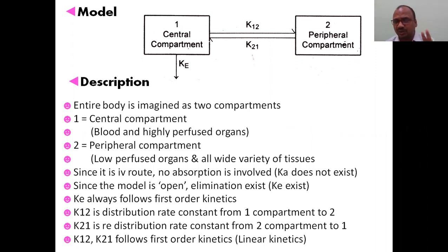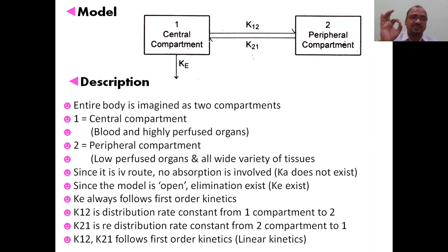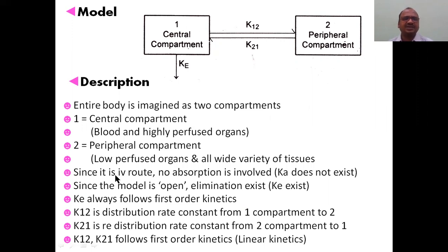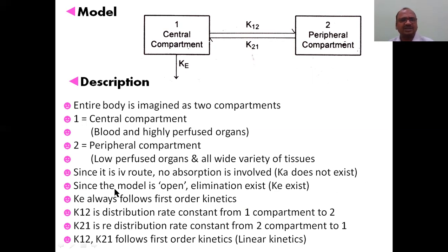Keep in mind that elimination always takes place from the central compartment only, because the kidney receives blood supply from systemic circulation. Elimination always follows first-order kinetics — this is very important. Irrespective of the model or route of administration, whether controlled release or sustained release, elimination rate constant ke always follows first order. Since this is an IV route, no absorption is involved, so ka does not exist — only ke is shown.